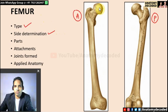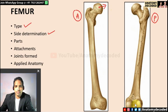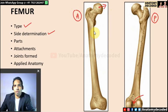For superior/inferior: the head is on the superior aspect. For medial/lateral: the head is facing on the medial aspect. For anterior/posterior: the intercondylar fossa, the space between the two condyles, is on the posterior aspect. Justifying these three points allows easy side determination of the femur.